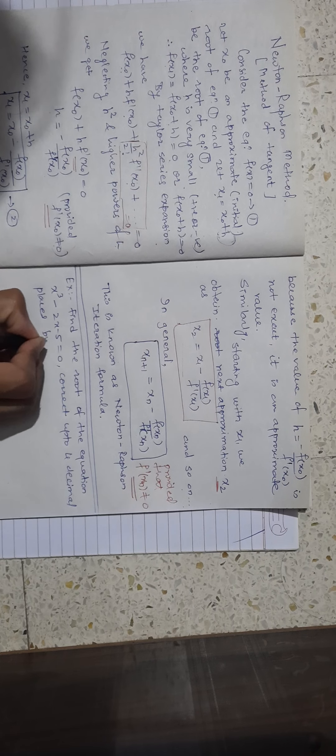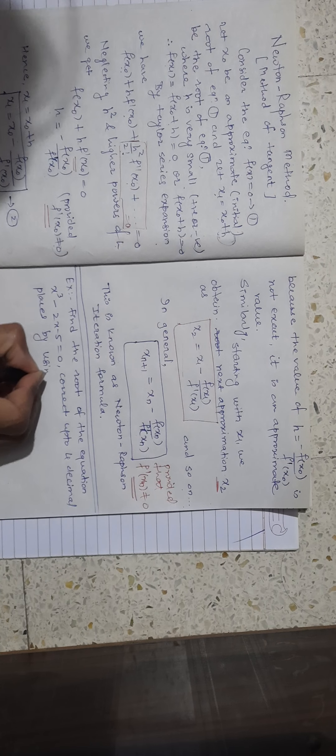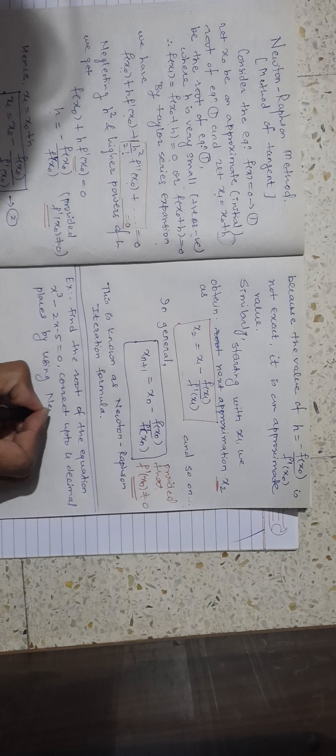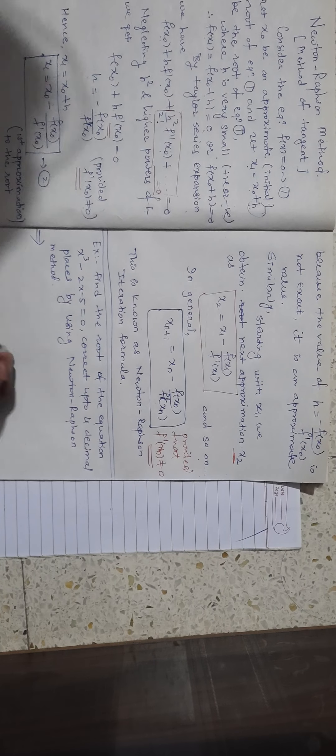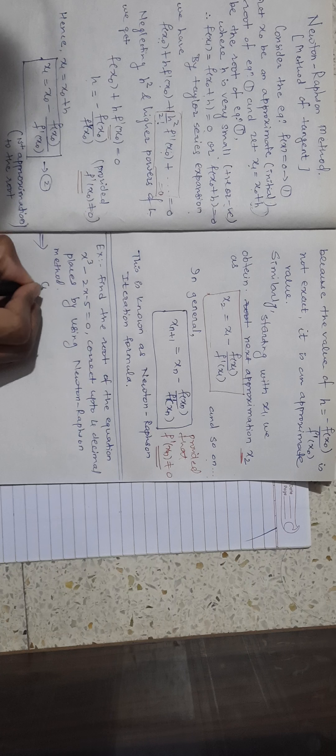Example: Find the root of the equation x³ - 2x - 5 = 0, correct to four decimal places, by using the Newton-Raphson method.